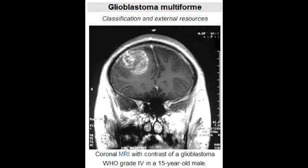What is butterfly glioma? Butterfly glioma is when glioblastoma multiforme crosses the corpus callosum, giving it the appearance of a butterfly — which is why it is called butterfly glioma.